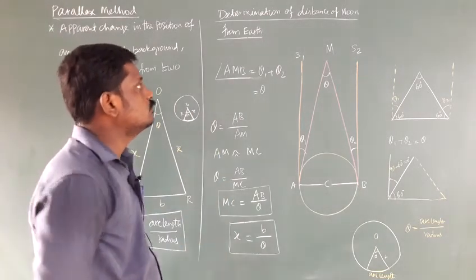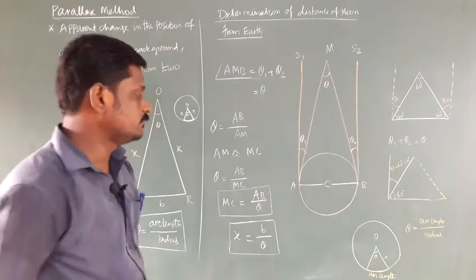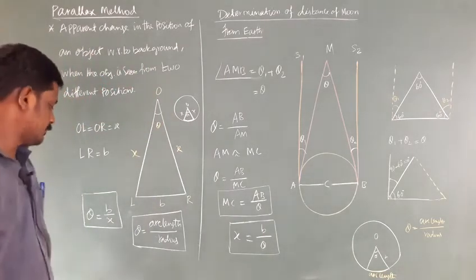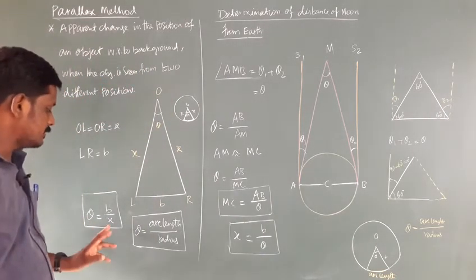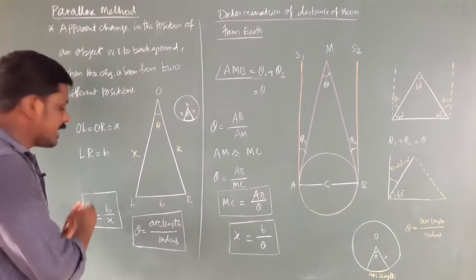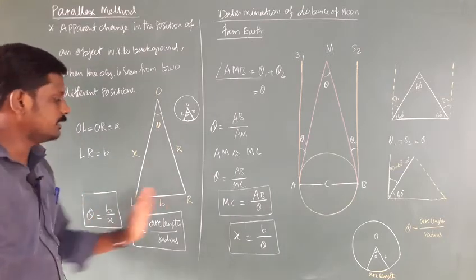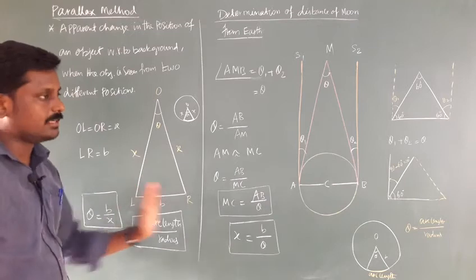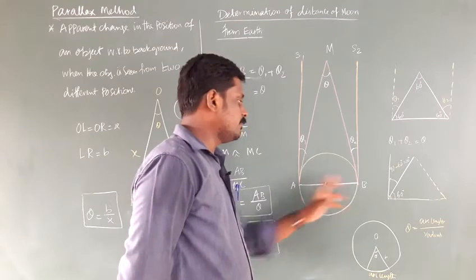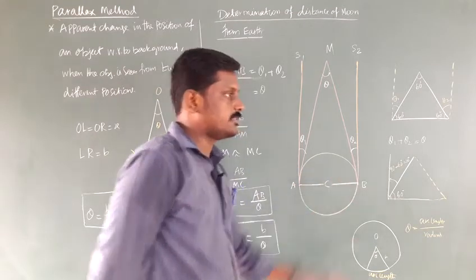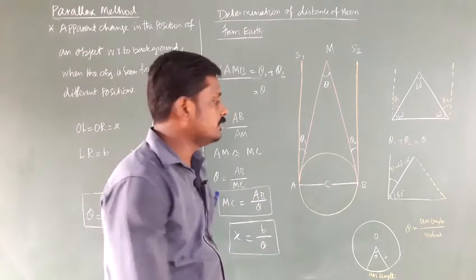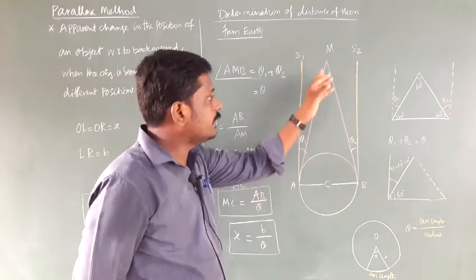From this idea we are going to find how to determine the distance of the Moon from the Earth. Theta is the parallactic angle, and X is the distance. If the distance is more, the angle is very small. To increase the angle, the basis — the distance between the two positions of observation — should be large. So consider the Earth: C is the center, and A and B are diametrically opposite points of observation, so the distance from A to B is very large, giving a greater parallactic angle.